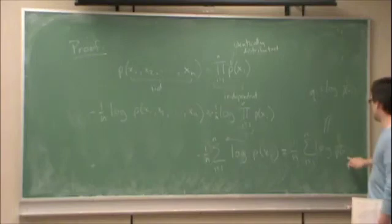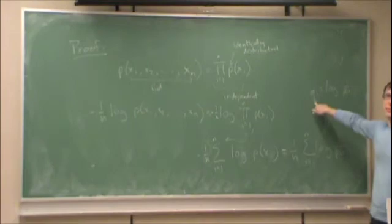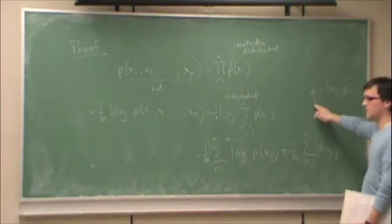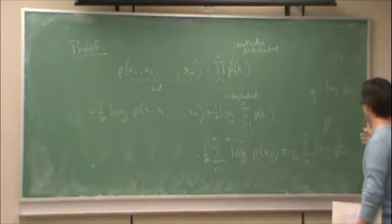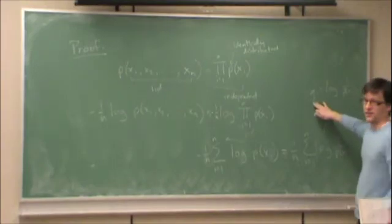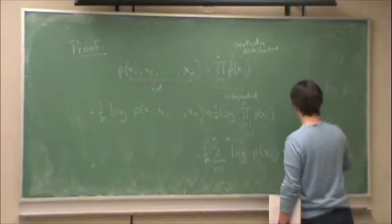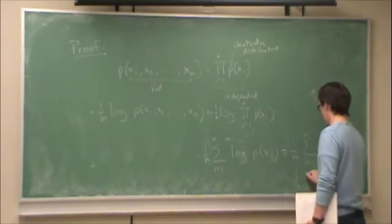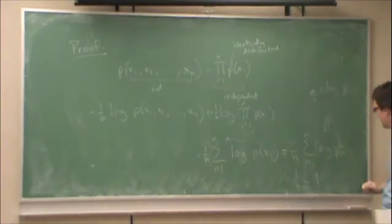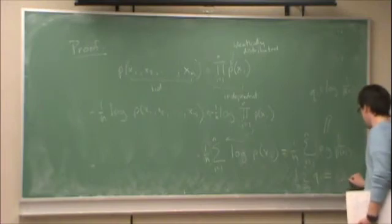For one thing, because xi is iid, qi must be iid. Because basically I'm doing the same thing to each xi. So the qi must be independent, because each one is only a function of xi. And they must be identically distributed, because I'm doing the same thing to each one. So therefore, I could say 1 over n, sum from i equals 1 to n of qi. And this would be the sample mean of q.